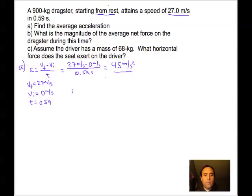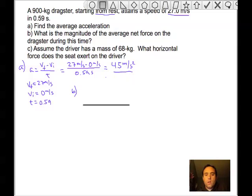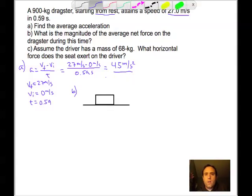So that's part A. For part B, it asks: what's the magnitude of the average net force on the dragster during this time? It's always helpful to draw a small free body diagram of the system. You have a surface, a car on that surface. There is some force acting on the car to make it move forward. It is accelerating at 45 meters per second squared.